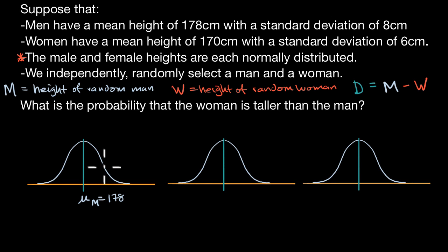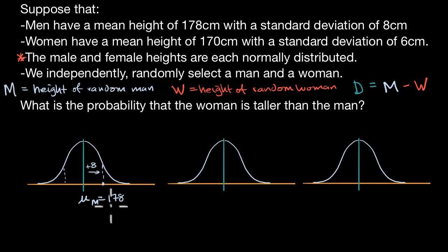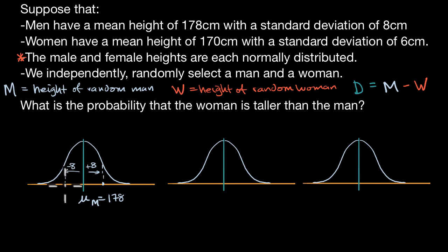For example, one standard deviation above the mean would be 186 centimeters, and one standard deviation below would be 170 centimeters. So this is the distribution for the random variable M.